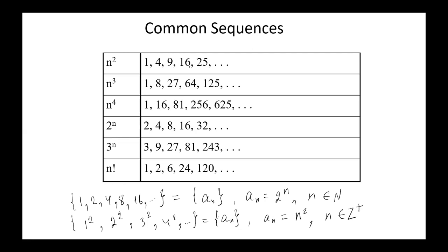Some common sequences are: n² → 1, 4, 9, 16, 25, etc.; n³ → 1, 8, 27, etc.; n⁴; 2^n → 2, 4, 8, 16, 32, etc.; 3^n → 3, 9, 27, 81, etc.; and n! (n factorial) → 1, 2, 6, 24, 120, etc.